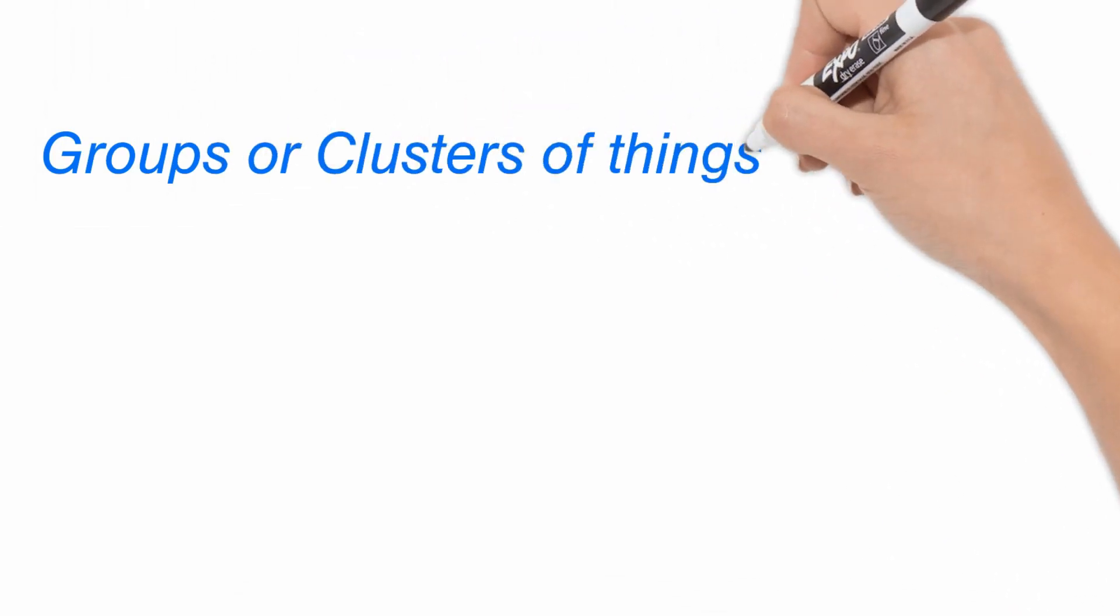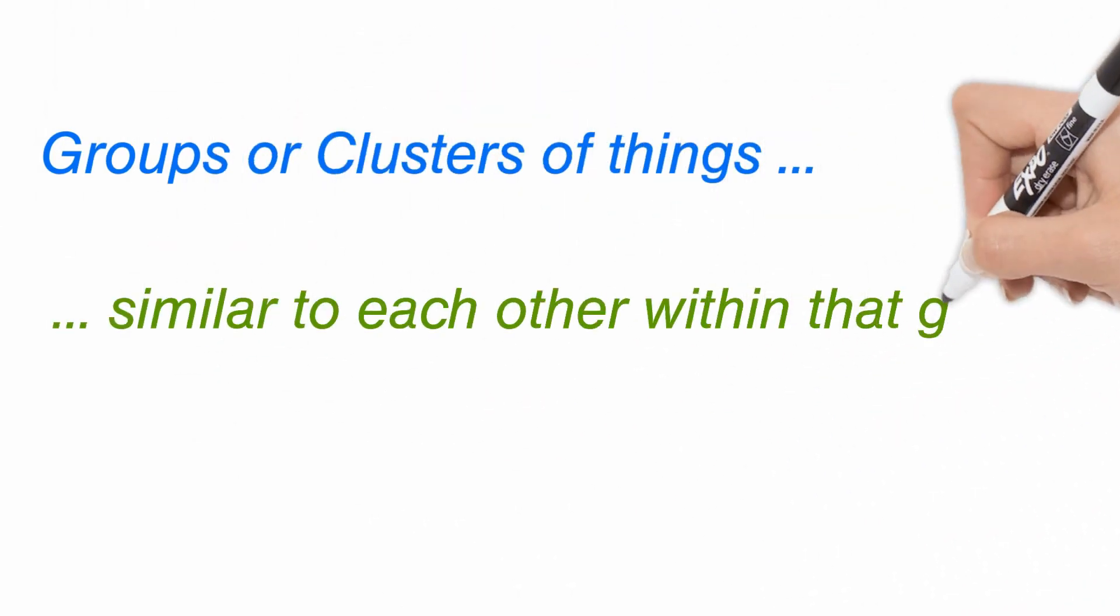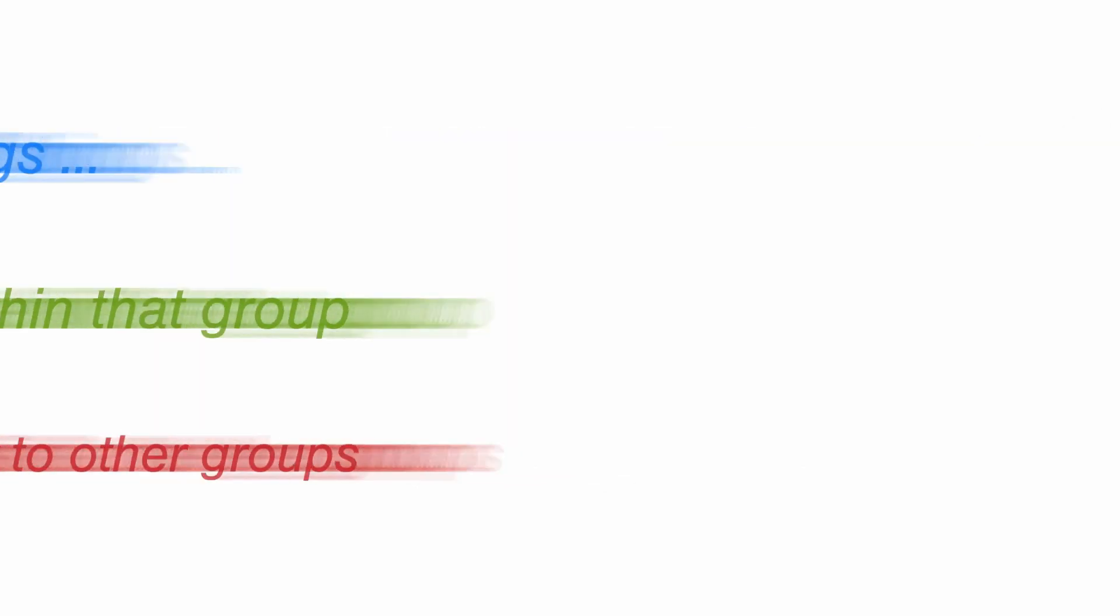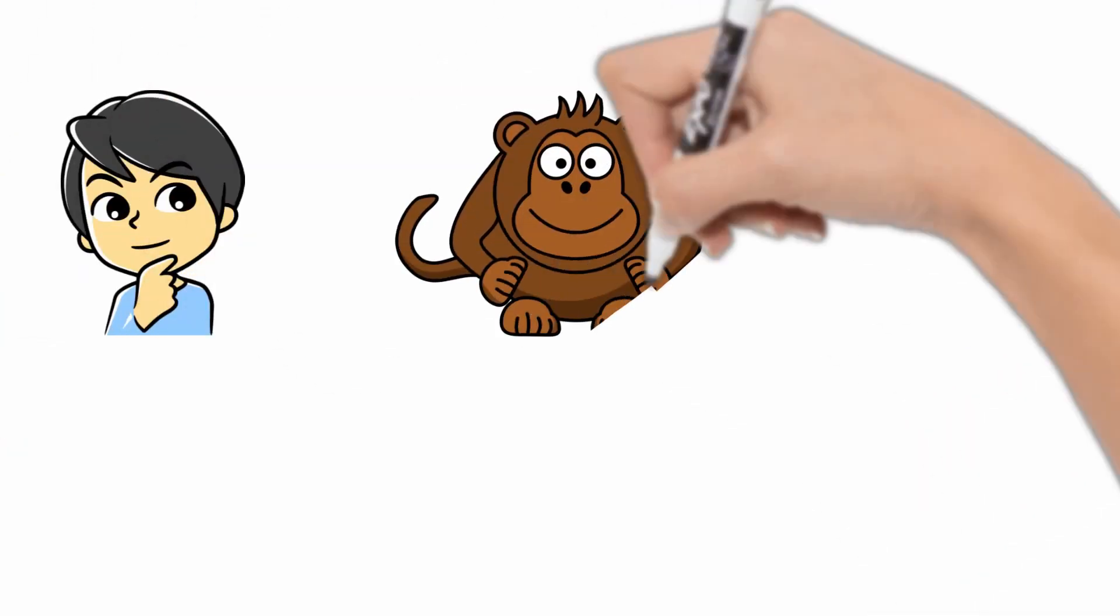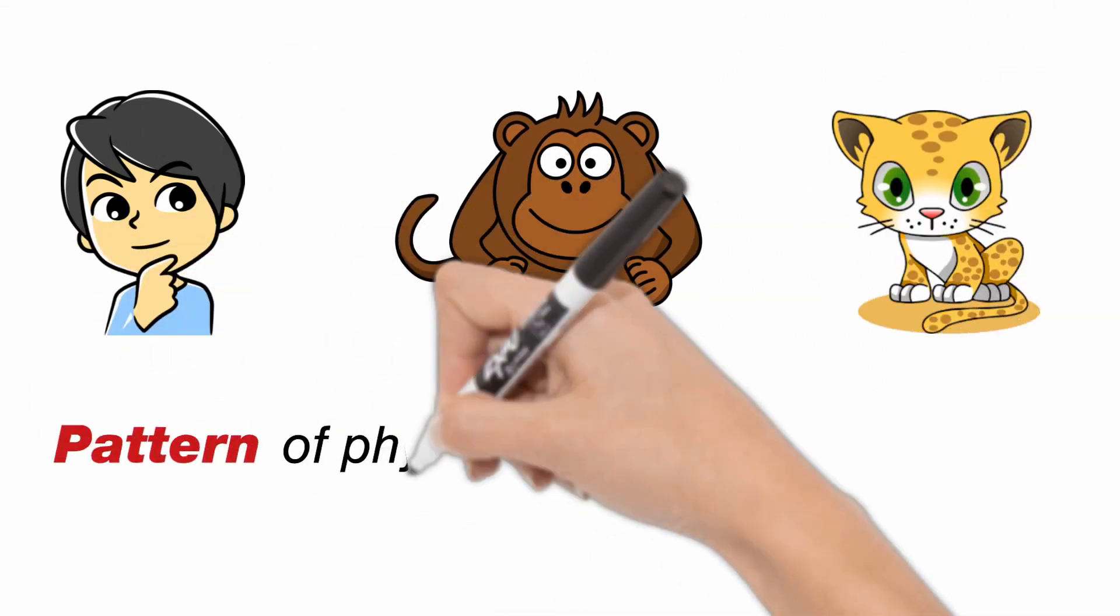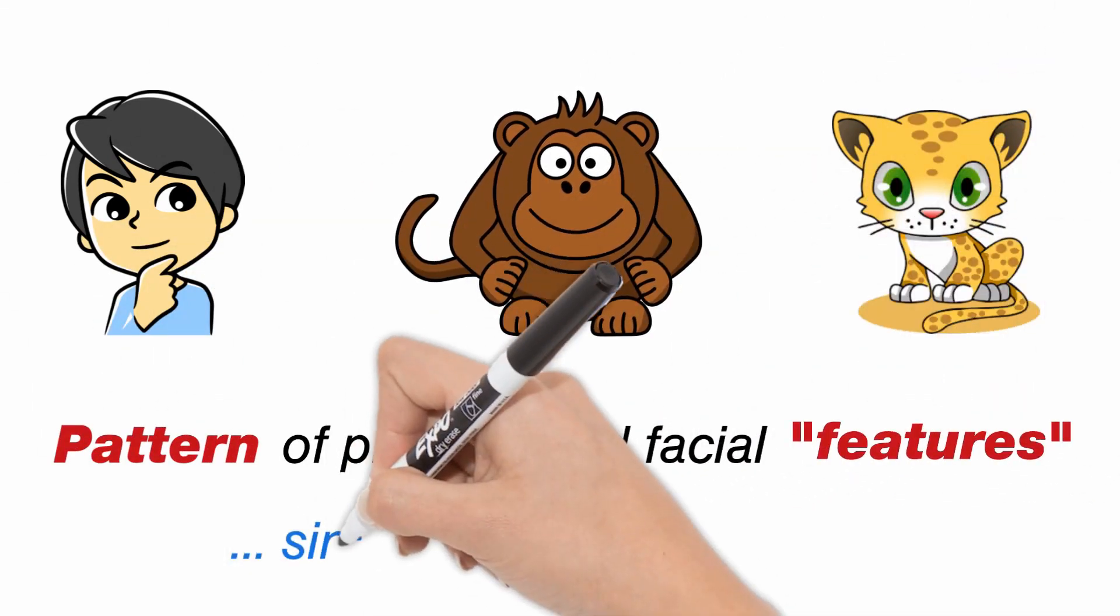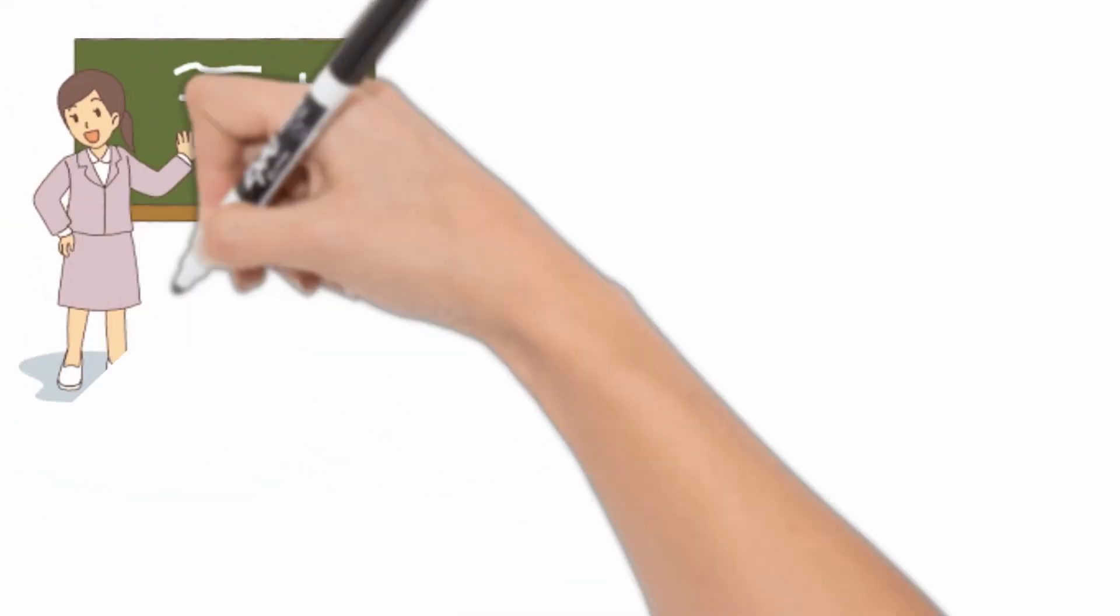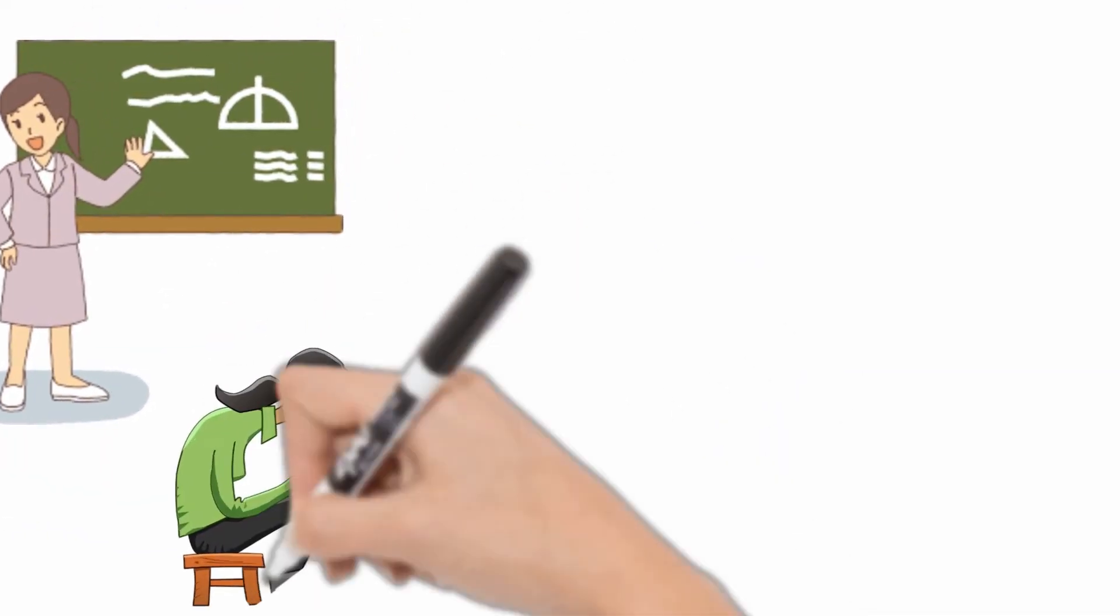On observation, you will notice that these are groups or clusters of similar things that are similar within that group but dissimilar to other groups. As human beings, we are taught to recognize a pattern of features to identify and group similar items and separate the dissimilar items. We have over the years been trained to recognize these patterns.